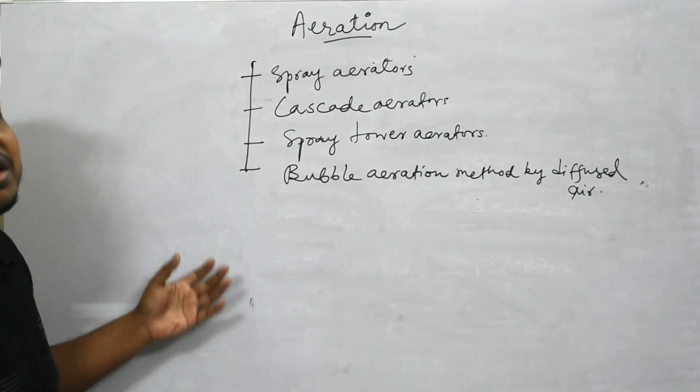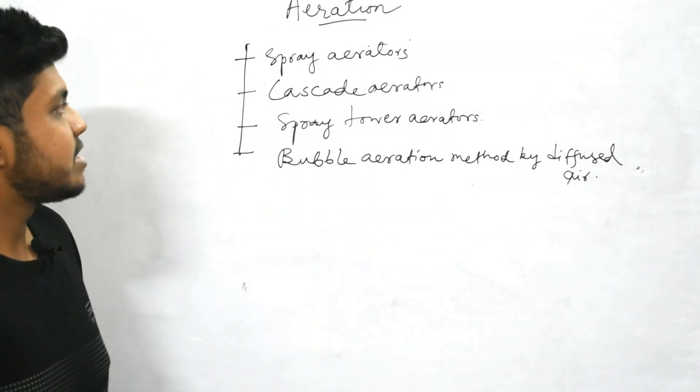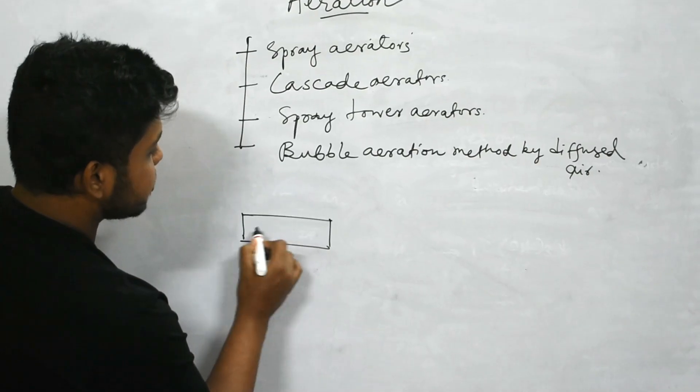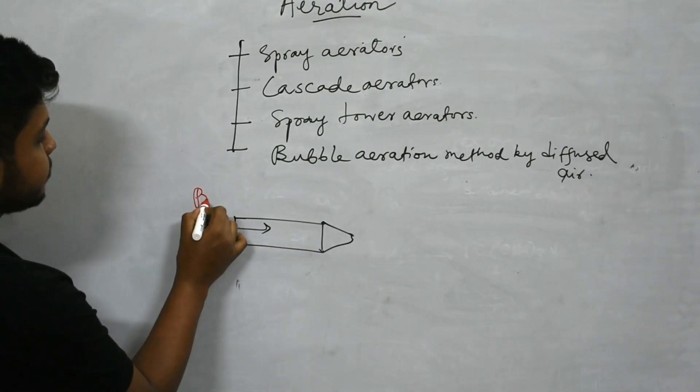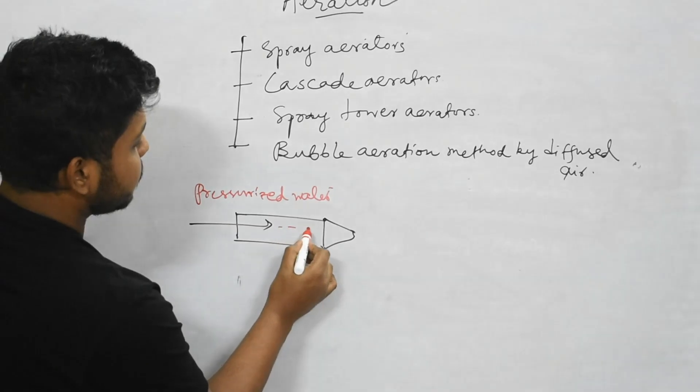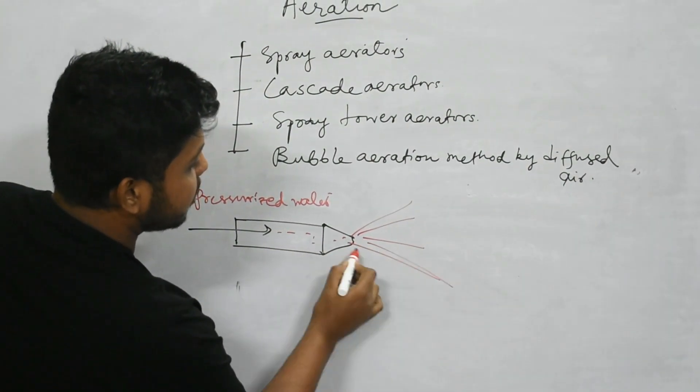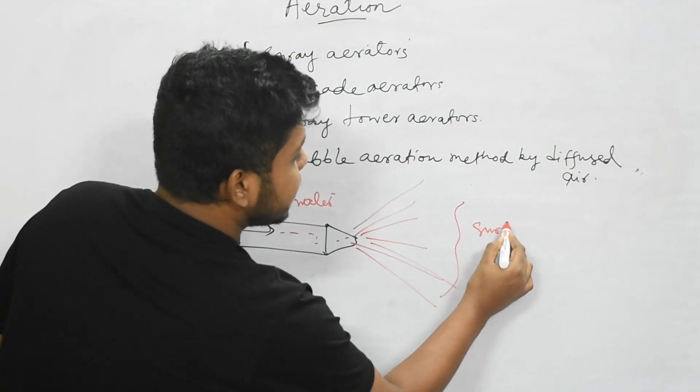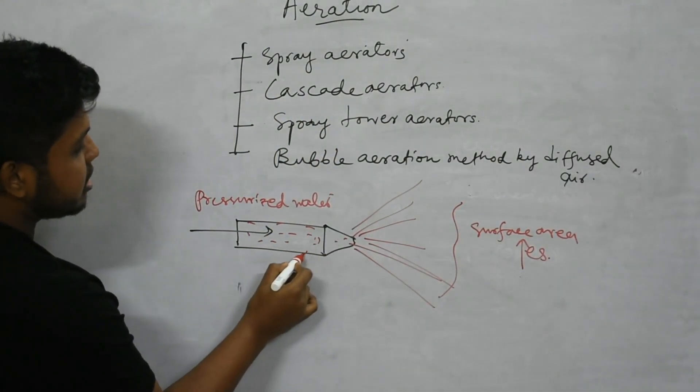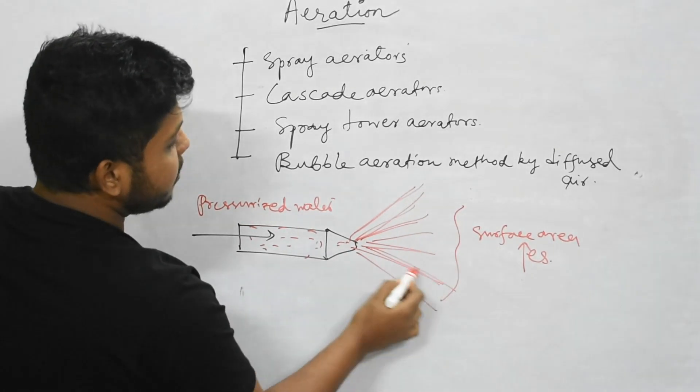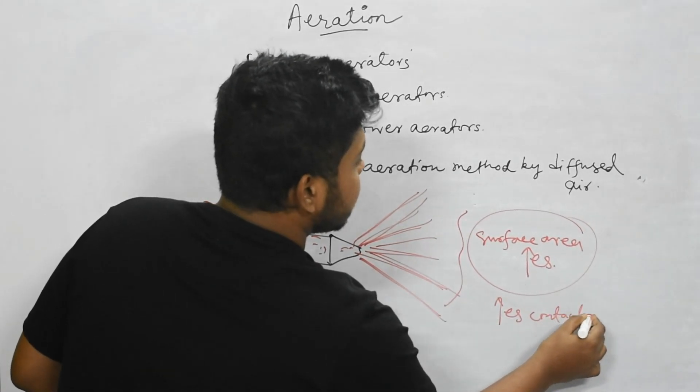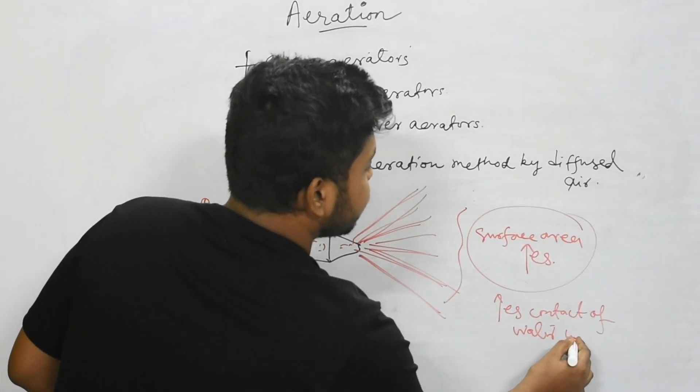Spray nozzle type aerators: this is a nozzle from where pressurized water flows through and gets dispersed. The surface area increases because the water going through this portion gets more surface area after exiting from this nozzle, and more the surface area, more will be the contact of water with air.